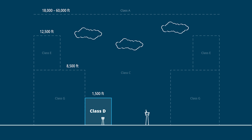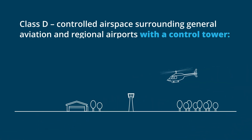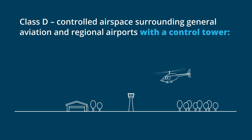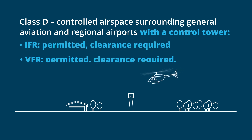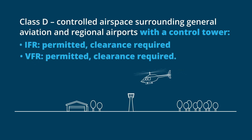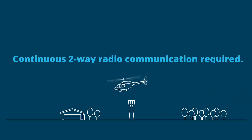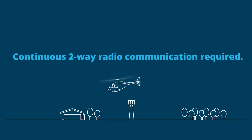Class D surrounds general aviation and regional airports with a control tower. IFR and VFR flights are permitted and require clearance. Continuous two-way radio communication is required.